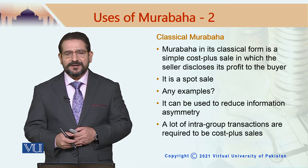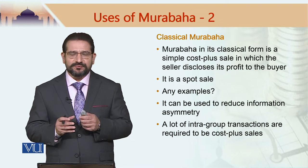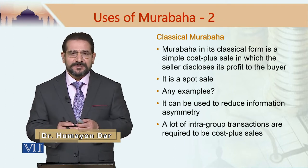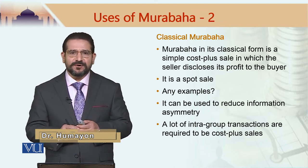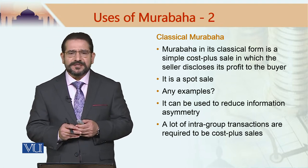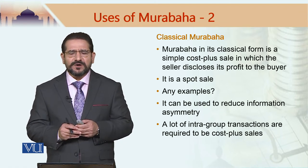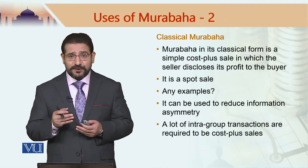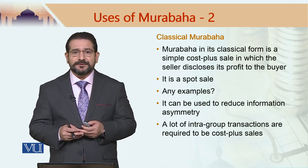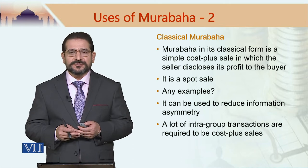In case of classical murabaha, the basic requirement was disclosure of the profit. This is a sale contract between a seller and a buyer such that it is a requirement for the seller to disclose their profit, and in most cases this was a spot sale. One may ask: why would someone selling something to a prospective buyer tell the cost of procurement of that item? Why would someone disclose the profit?